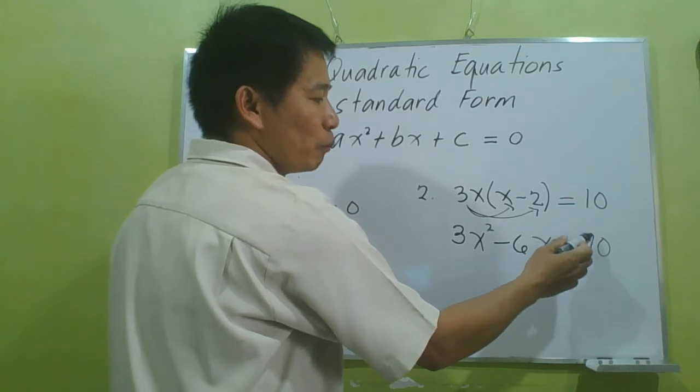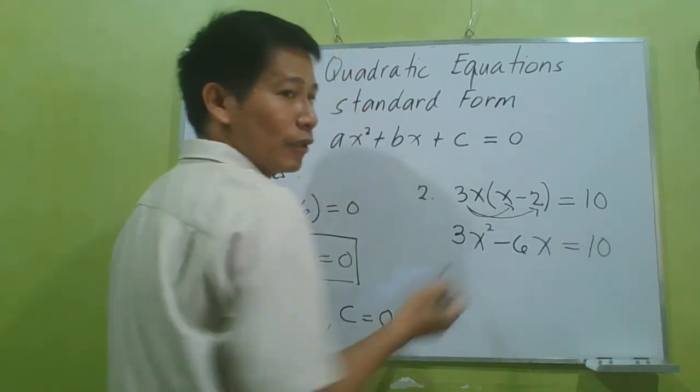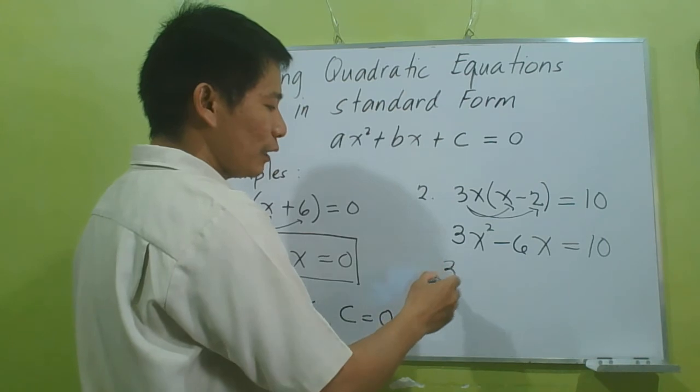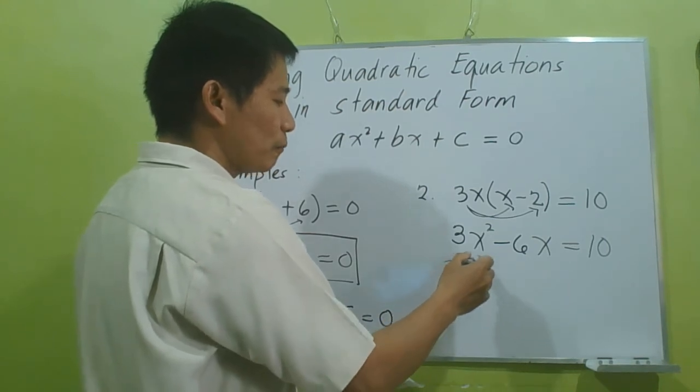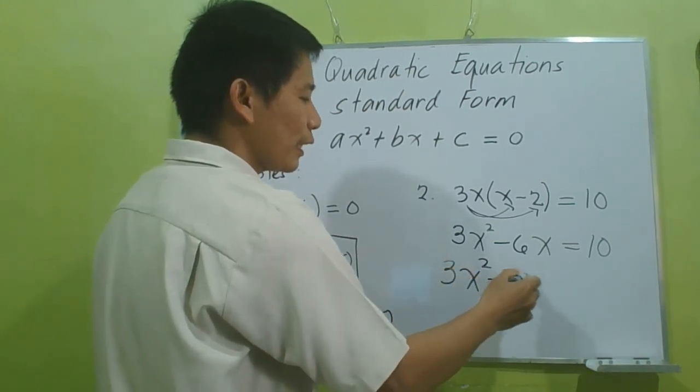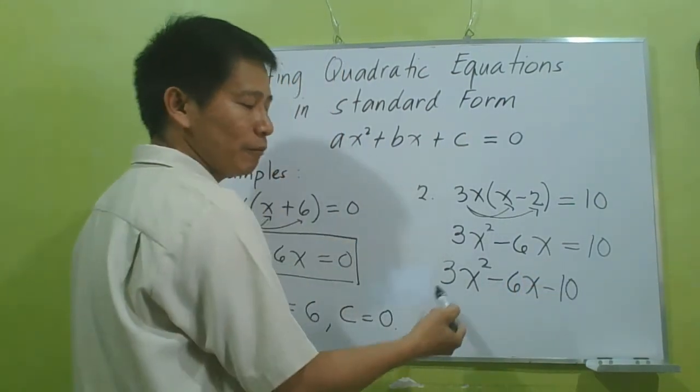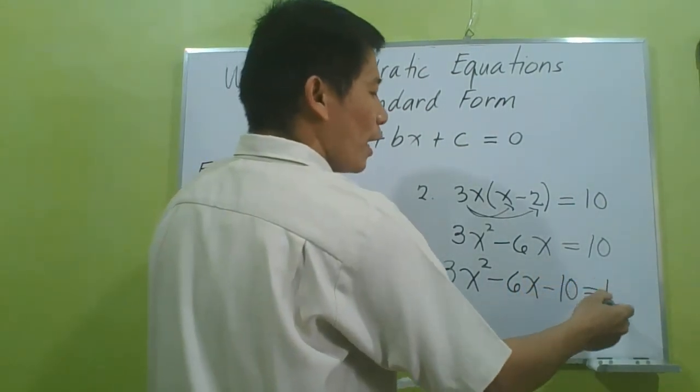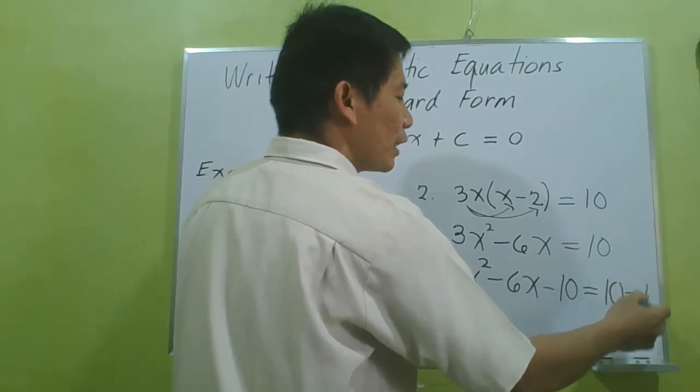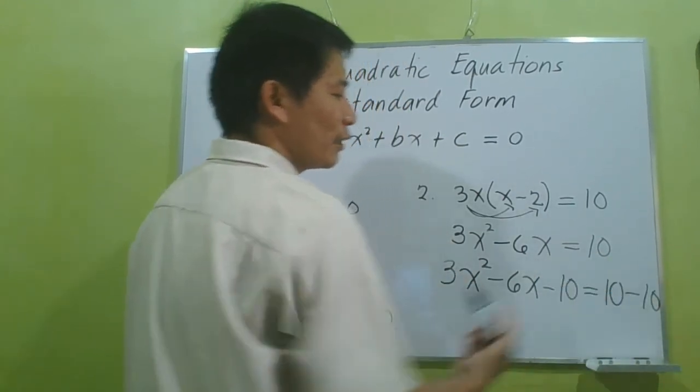We have 10 minus 10 is 0. Applying the property, we will have 3x² - 6x minus 10. We subtract 10 on the left side, and we also have 10 minus 10, so we also subtracted 10 on the right side.